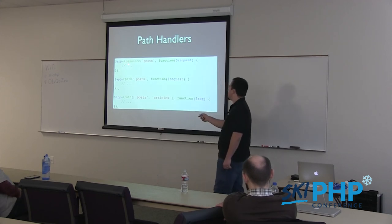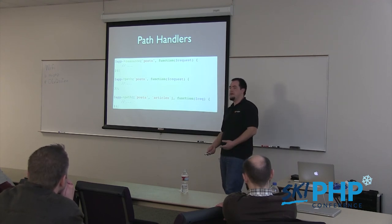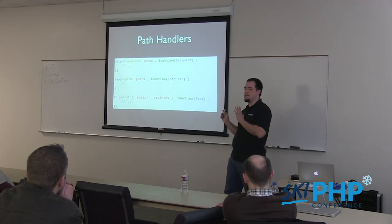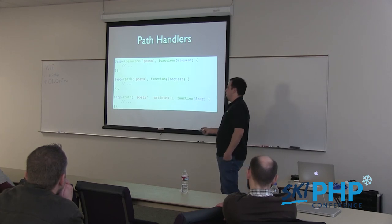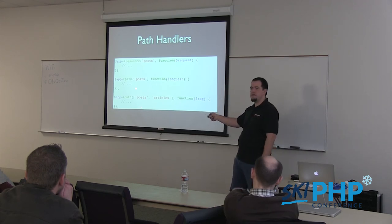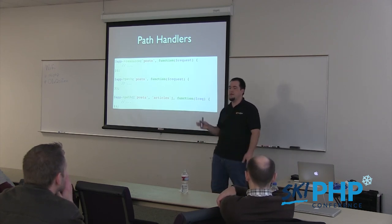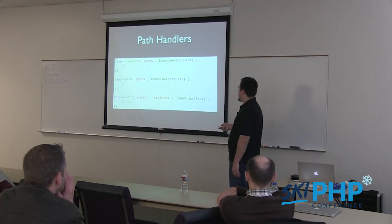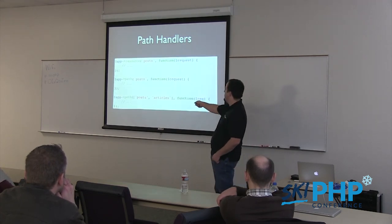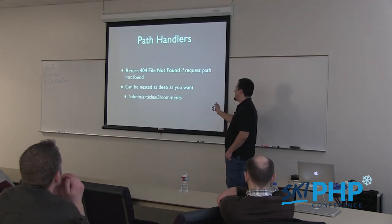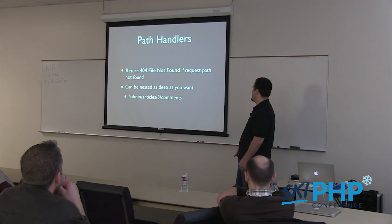Bullet route handlers: the path handler has an alias called resource if you'd rather start with resources - a little more RESTful. It does the same thing - just a static string path that gets matched. You can also do an array, which is common for index paths. You can do slash and index so if someone goes to slash index.html or index.json it'll get to it. The path handler returns a 404 file-not-found if it can't find the path, and it can be nested as deeply as you want.